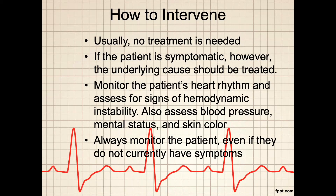As for interventions, usually no treatment is needed. If, however, the patient is symptomatic, the underlying cause should be treated. Monitor the patient's heart rhythm and assess for signs of hemodynamic instability. Also assess blood pressure, mental status, and skin color. Always monitor the patient, even if they do not currently have symptoms. The patient suffering from these types of atrial arrhythmias can either be asymptomatic or be at risk for significantly more dangerous dysrhythmias.